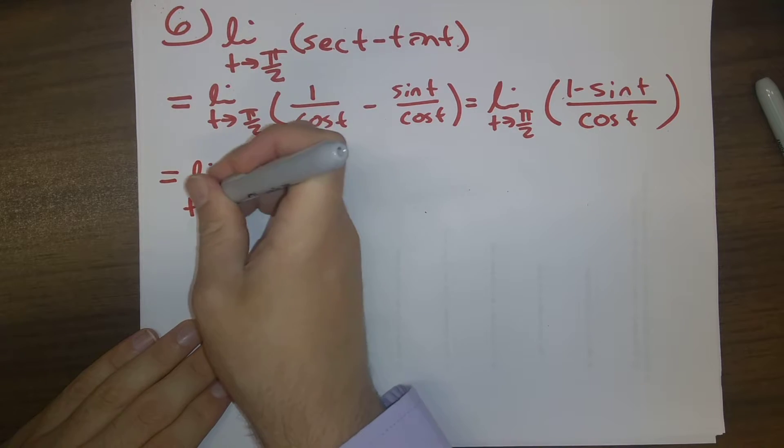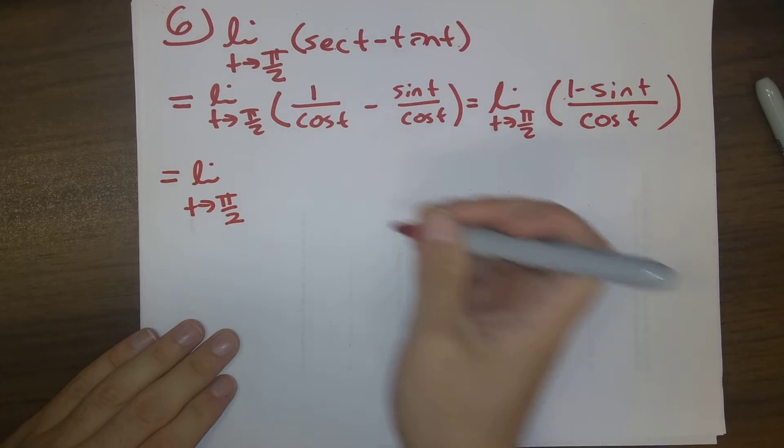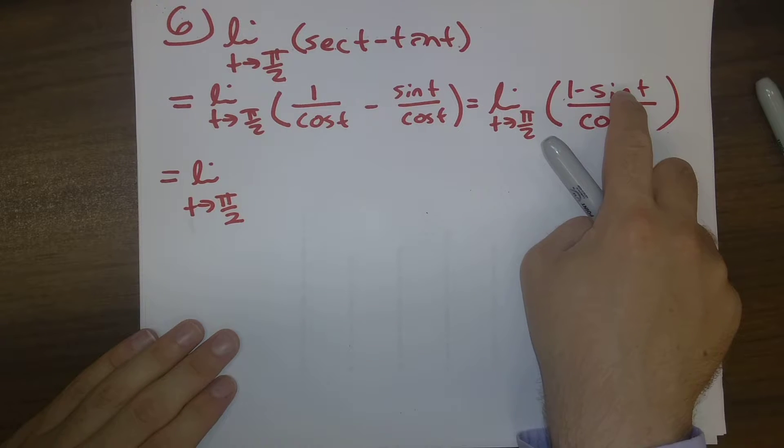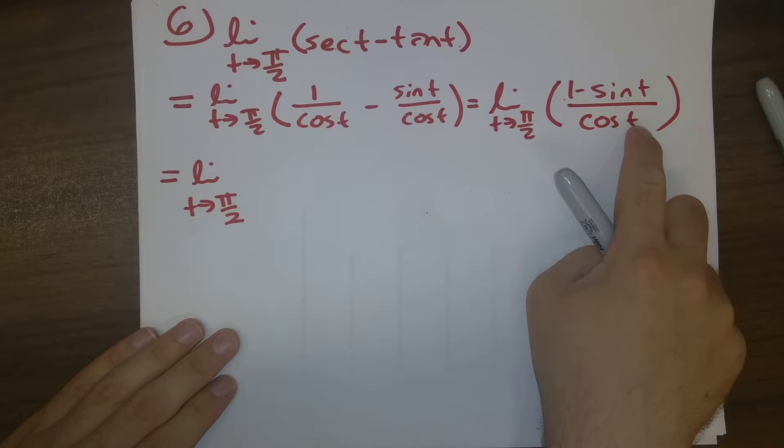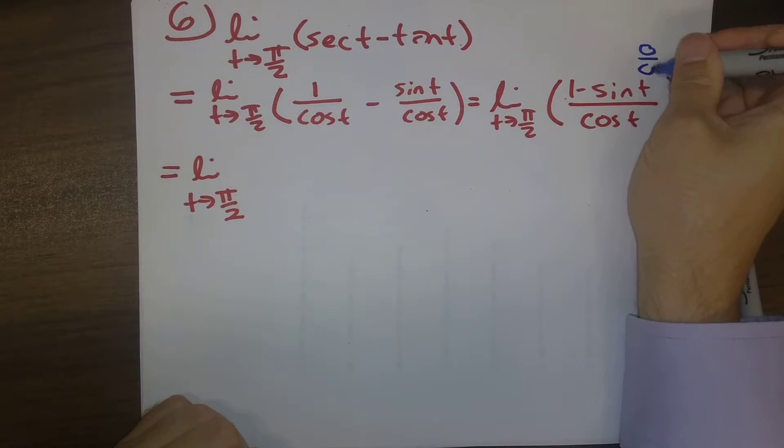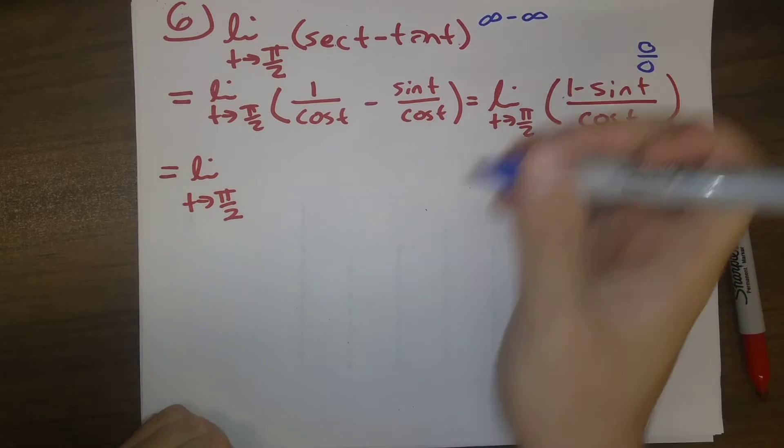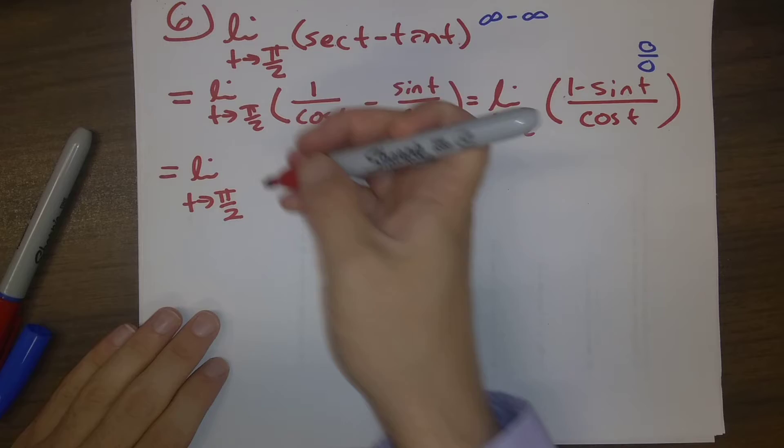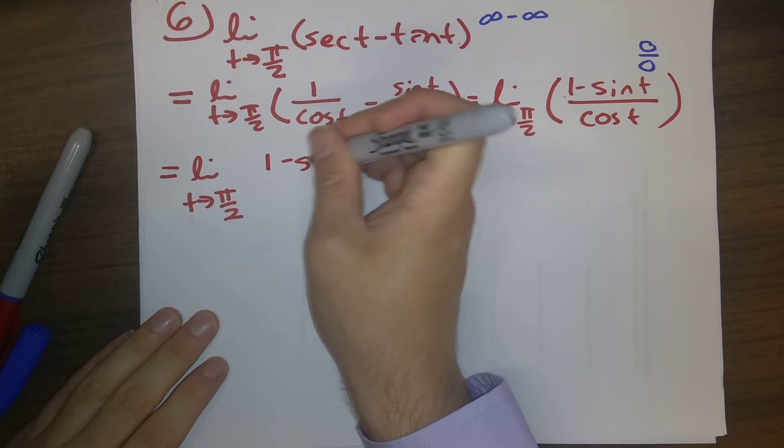So here's the trick. We have the limit as t goes to pi over two. Note that one minus sine of pi over two is zero, cosine pi over two is zero, so we're in a zero over zero indeterminate form. We went from an infinity minus infinity indeterminate form to a zero over zero indeterminate form.